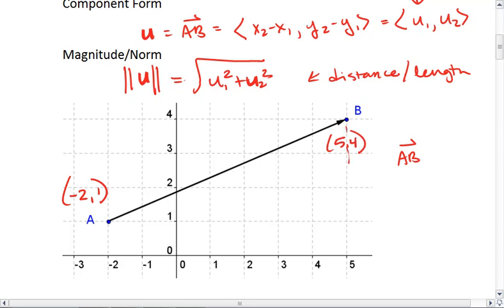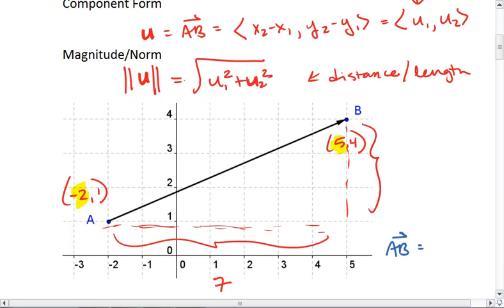This means we have a horizontal distance of 5 minus negative 2, which is 7.